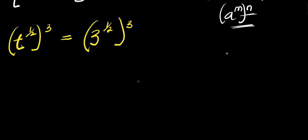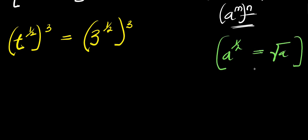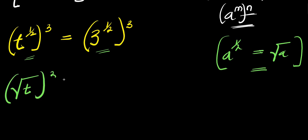Now remember if you have a to the power of 1 over 2, this equals the square root of a. We apply this here and here, so we have square root of t raised to the power of 3, equals square root of 3 raised to the power of 3.